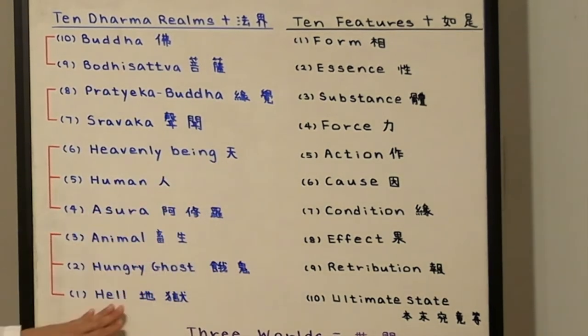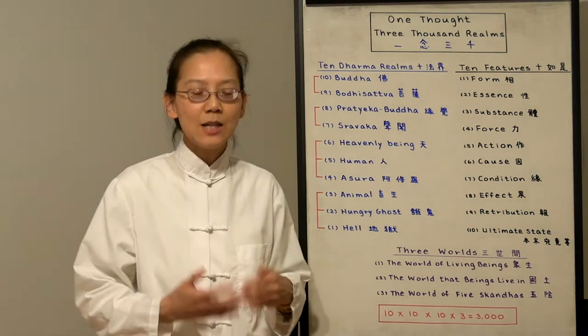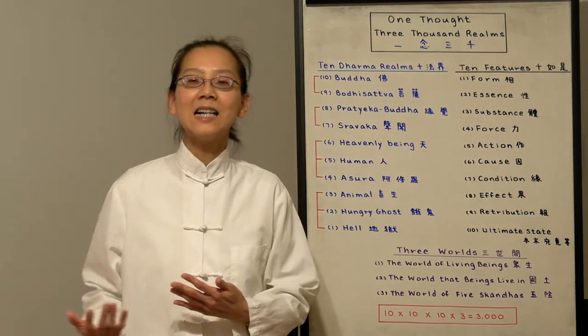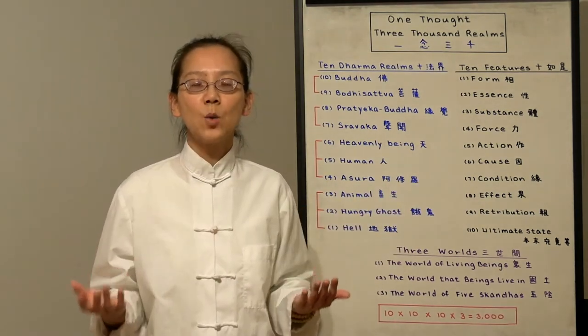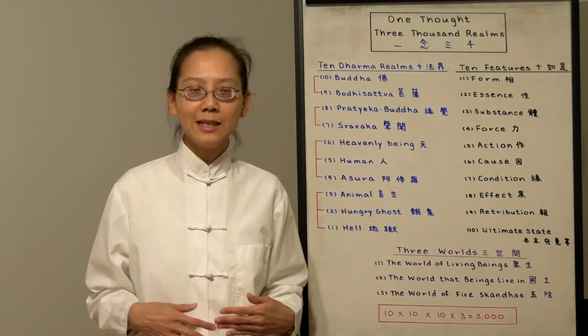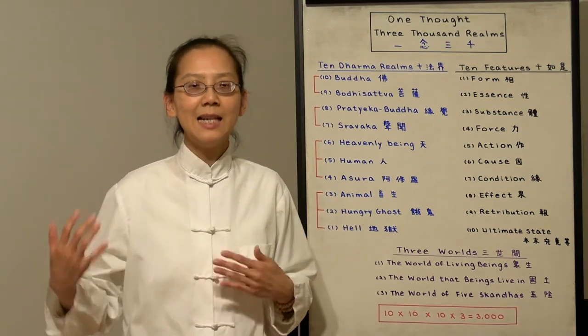Number 6, Main Causes. For the hell beings, their main causes are their unwholesome deeds such as killing, stealing and sexual misconduct. Buddha's causes are the adornment of their perfect wisdom, wisdom of the middle way, which is their Buddha nature. Understanding everything that is conditioned—existence is empty in essence.